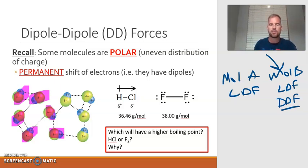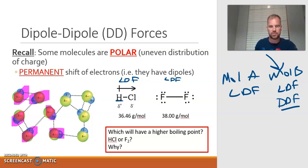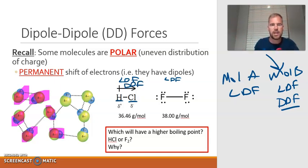Let's take a look at the hydrogen chloride molecule and the fluorine molecule. Both of these are going to experience London dispersion forces because every single molecule experiences that. But to see if they experience dipole-dipole forces, you have to ask yourself: are either of these molecules polar? The hydrogen chloride molecule is polar because hydrogen is different than chlorine, so there will be an uneven distribution. So hydrogen chloride has dipole-dipole forces.